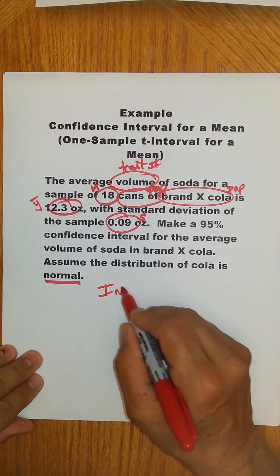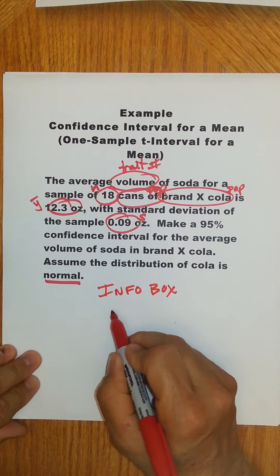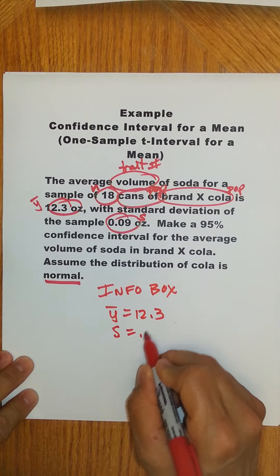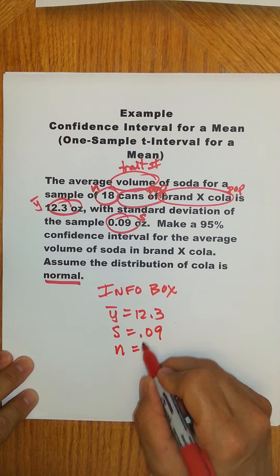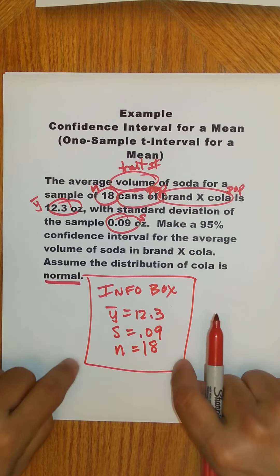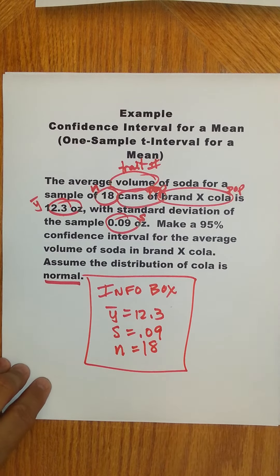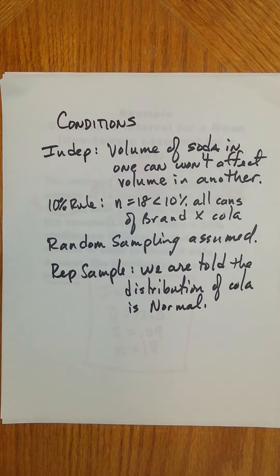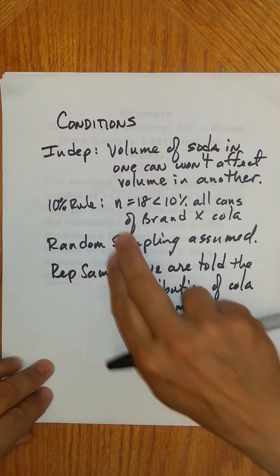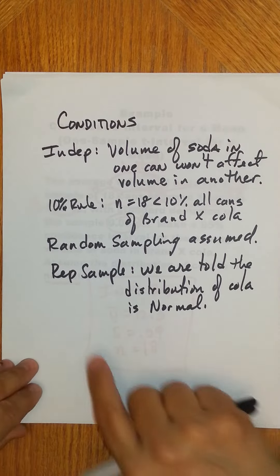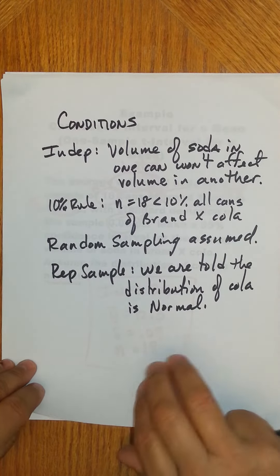Now specifically for this problem, let's set up our info box. What I have is y bar is 12.3, s is 0.09, and n is 18. So every time you work with a numerical trait, this is the information you need to find in each problem. Let's look at our conditions. We know the volume of soda in one can won't affect the volume in another. 10% rule, 18 is very small, obviously less than 10% of all cans. It would be very easy to randomly select 18 cans. And we are told the distribution is normal. So we're good. Conditions are met.